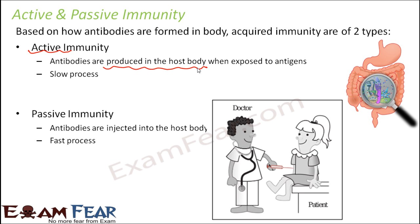When we talk about passive immunity, let us take the example of a person who is already suffering from a disease — the person already got infected with a particular disease. Now in order to save that person, the ready-made antibodies are injected in the form of injections. As soon as those antibodies enter inside the body, they start fighting against the antigens and help to cure that person. So that is passive immunity.